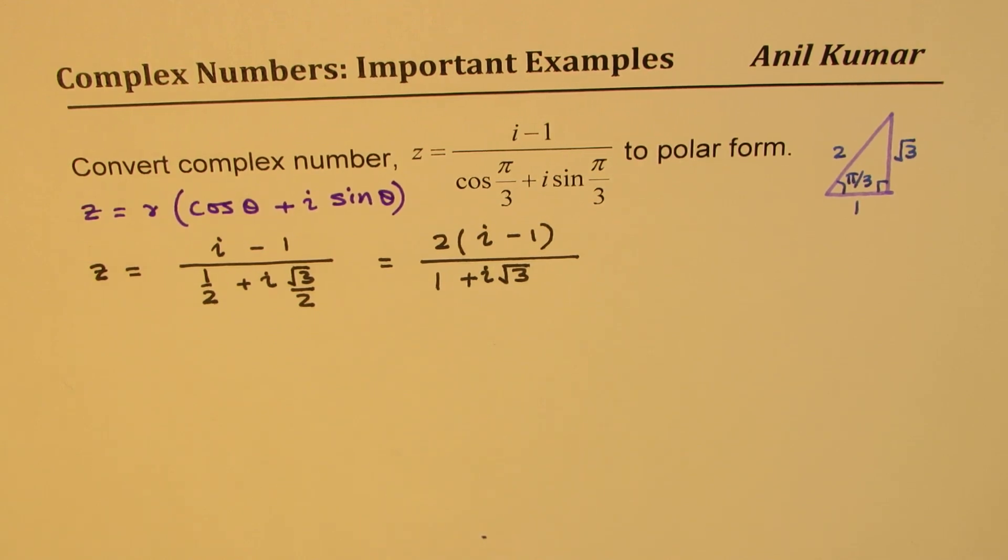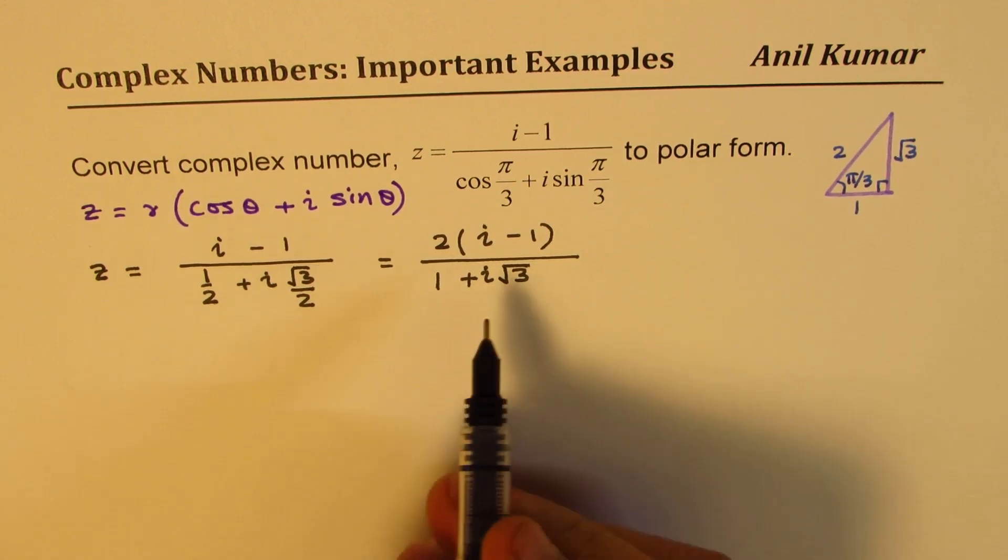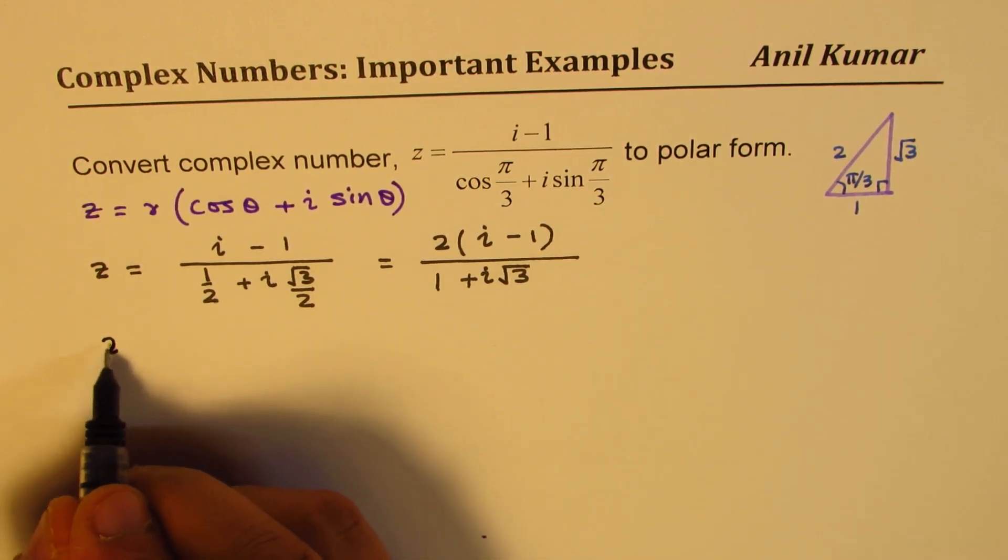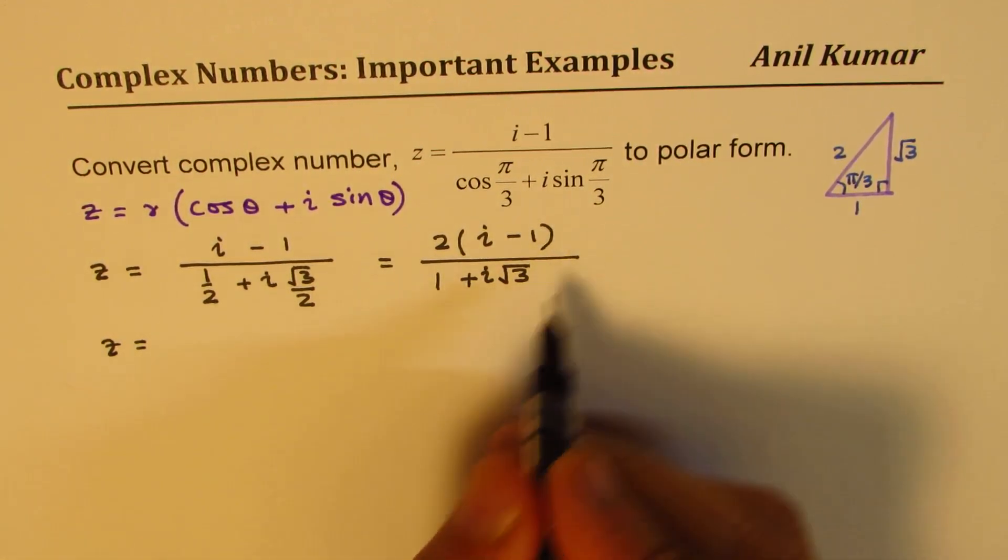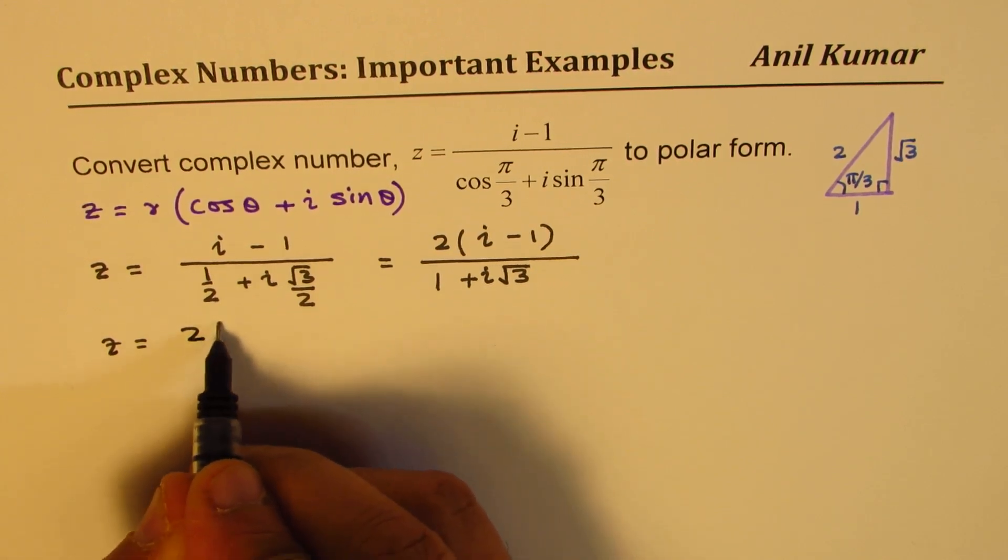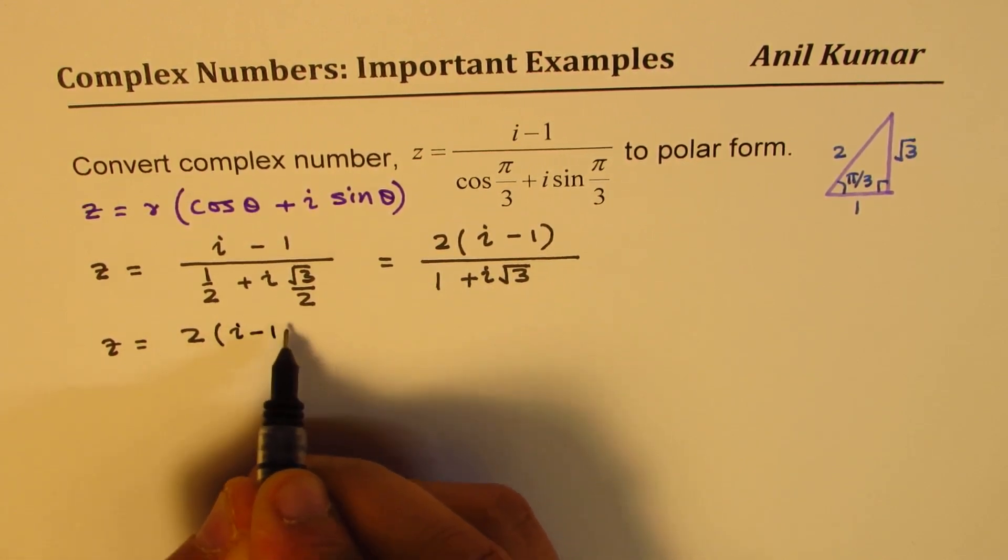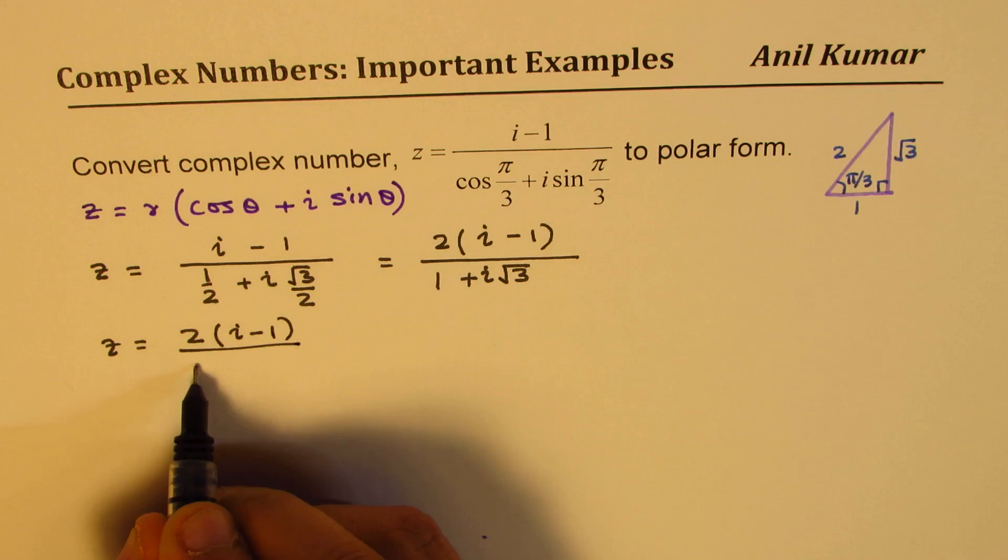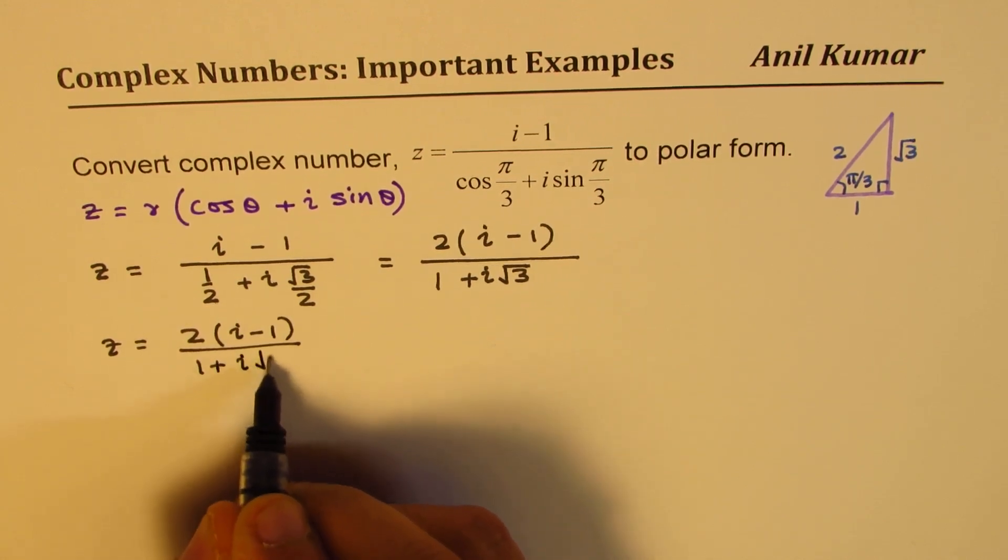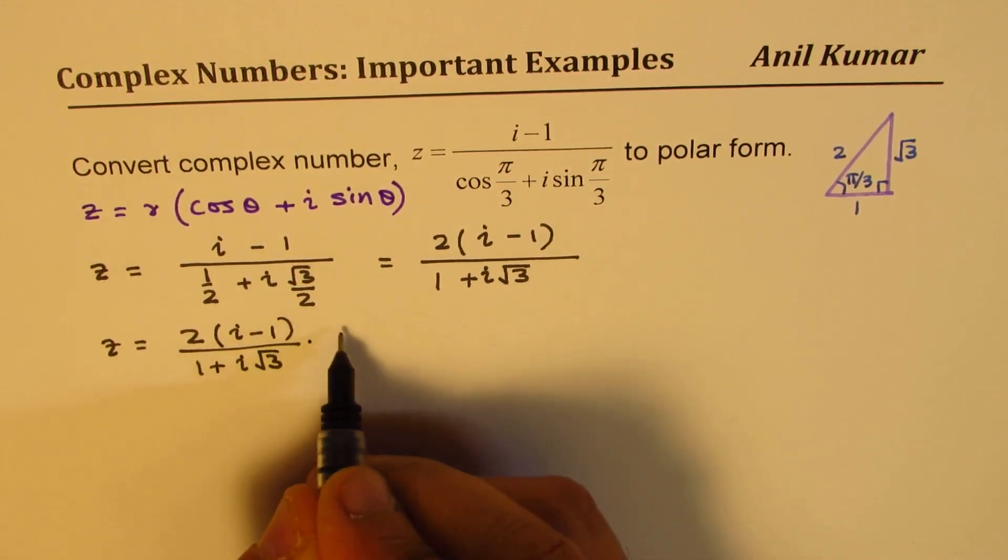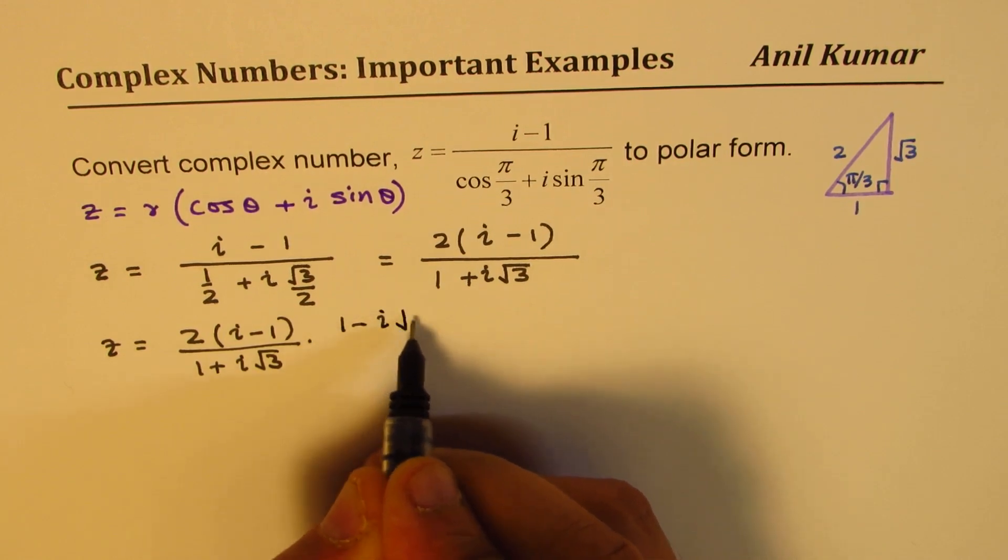Now to simplify, we should actually multiply by its conjugate. So we get 2(i minus 1) over 1 plus i√3. We will multiply and divide by 1 minus i√3.